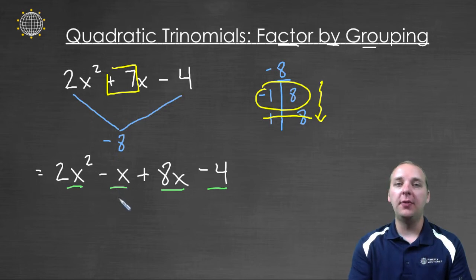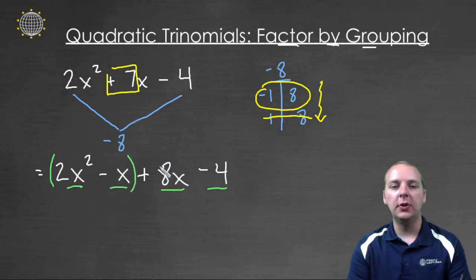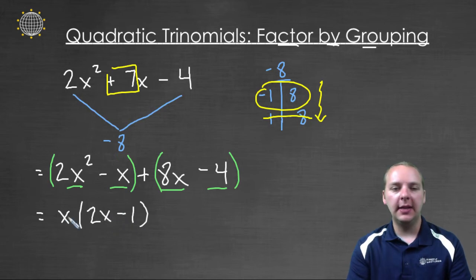And so now we can proceed with factoring by grouping as we typically do, where we group the first two terms and we group the second two terms. And then we're going to look for any common factors in each of these separate groups. In the first group I have a common factor of x, and I would have leftovers of 2x - 1, because x times 2x is 2x², and x times 1 gives me x.